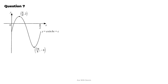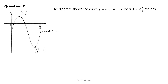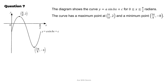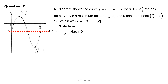Question 7. A diagram shows the curve y equals a·sin(bx) plus c for x from 0 to π/2 radians. The maximum point is at (π/8, 2) and minimum point at (3π/8, negative 8). Part a: explain why c equals negative 3. The neutral line c equals (maximum plus minimum) divided by 2 equals (2 plus negative 8) divided by 2 equals negative 3.